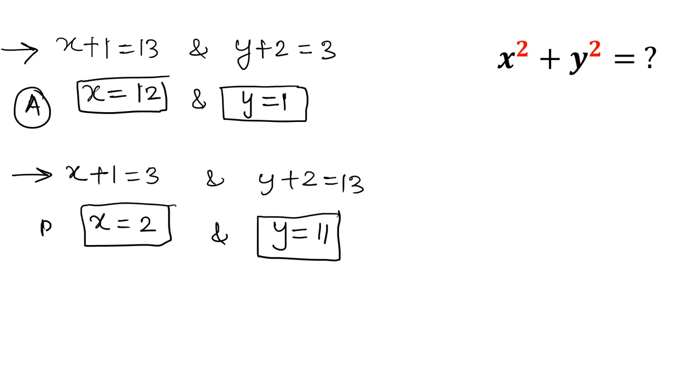That is the second solution. Now we have to find the value of x square plus y square. For case A: 12 square plus 1 square equals 144 plus 1. So from case A our answer is 145.